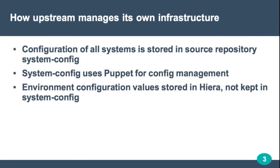How OpenStack manages its own infrastructure: the configuration of all systems for the OpenStack Infra is stored in a source repository called system-config. This repository is written in Puppet and contains quite a few Puppet modules. The environment configuration values are stored in Hiera and are not kept in system-config. The reason is that you do not want to put sensitive information like SSH keys or SSL certificates into a public repository, so that's kept completely separate and private.